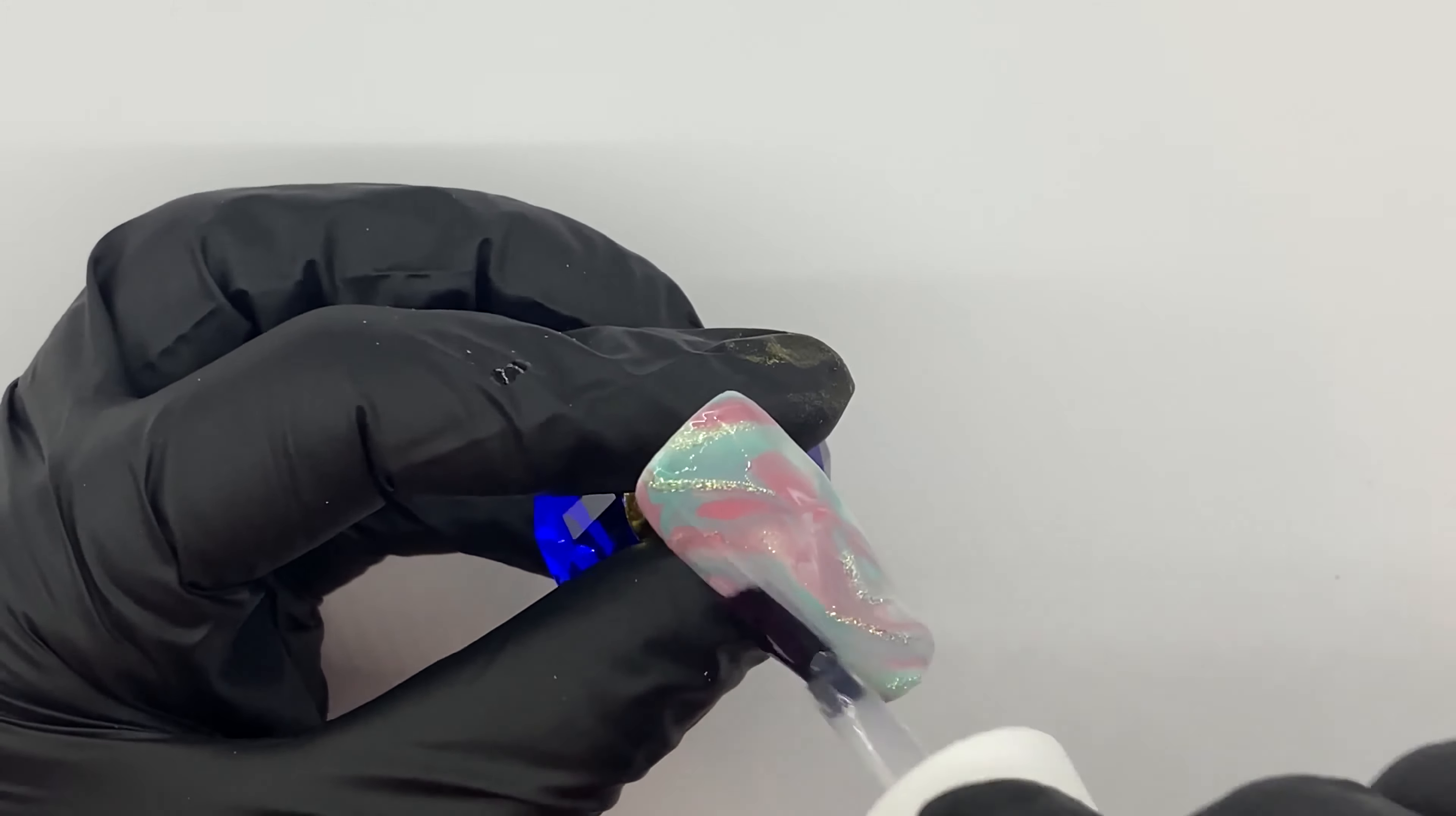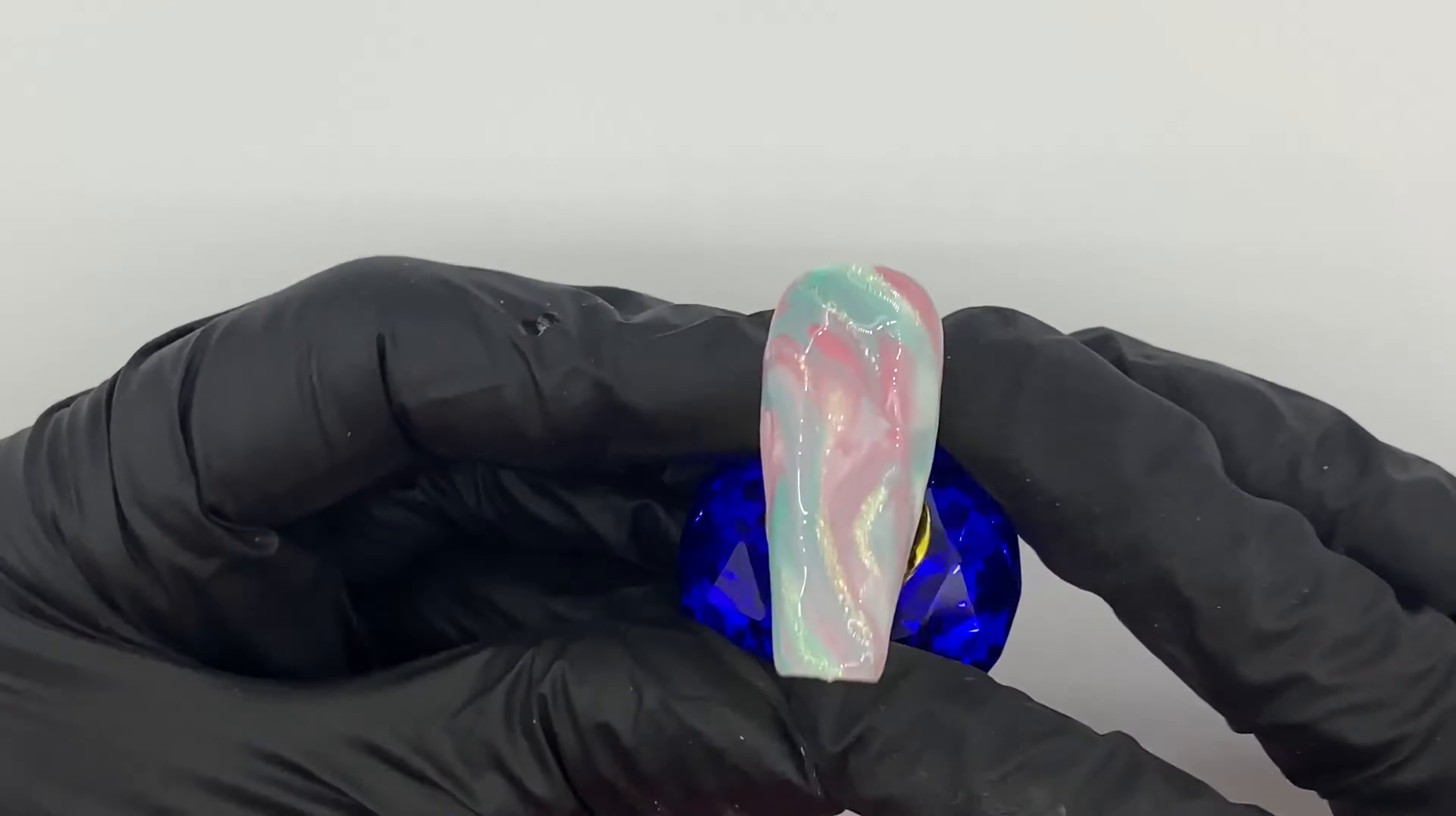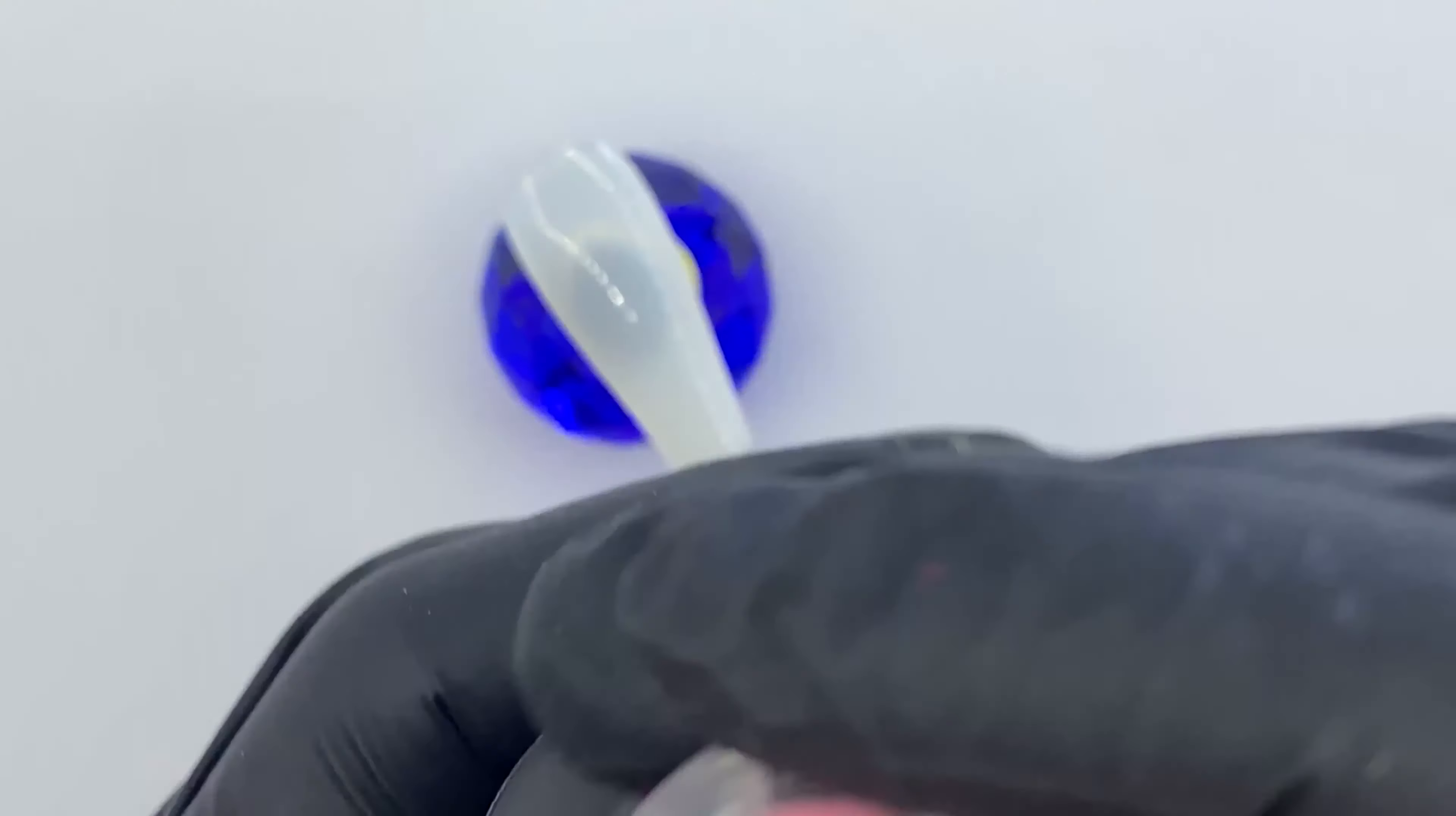Now I'm just going in with some matte top coat, nice thin layer. Make sure you cover the whole nail, you don't want any shiny bits.